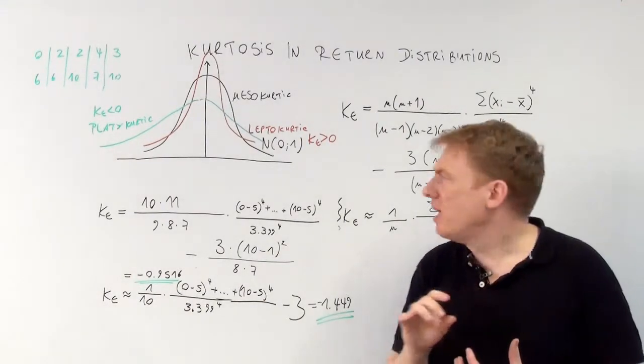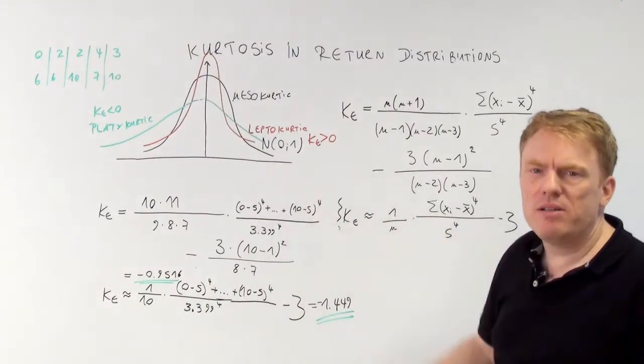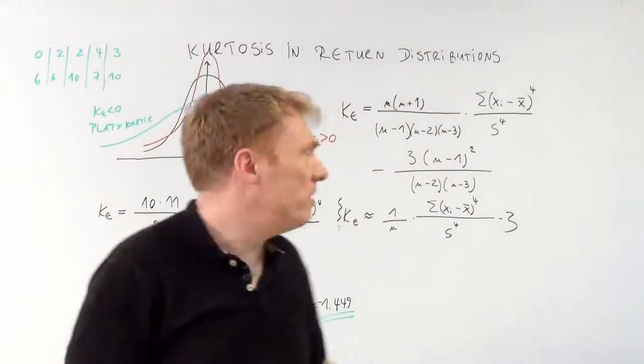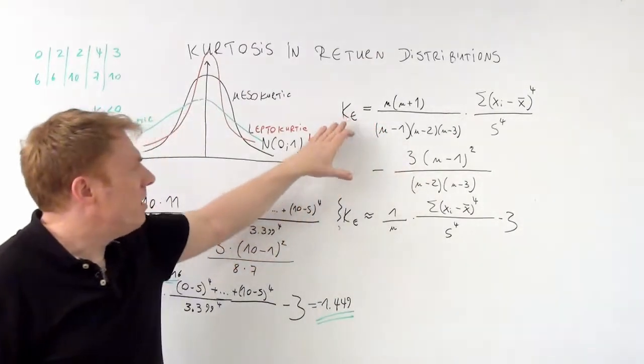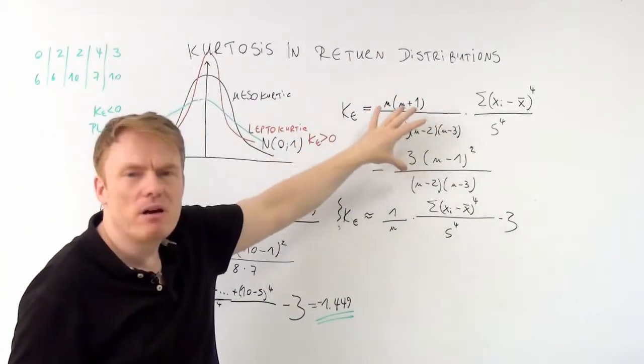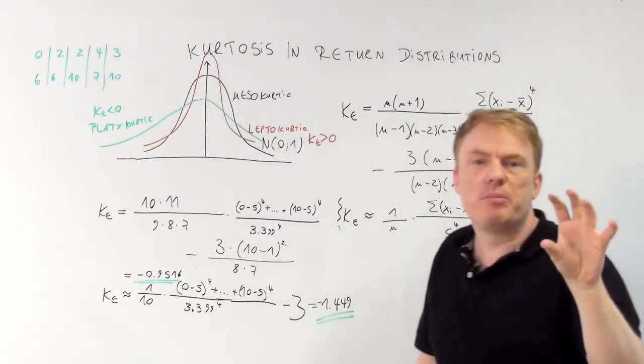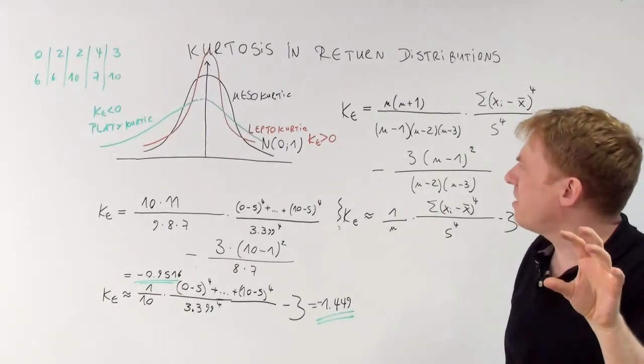Leptocurtic has an index k sub e, which is strictly greater than 0. The k sub e is calculated this way, a very large formula. This number is very important to the kurtosis.